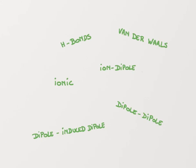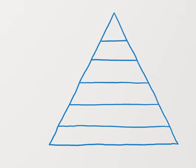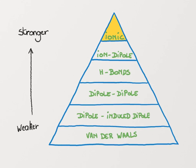Remember that the strongest interaction is an ion-ion interaction, as it involves full charges. The next strongest category is ion-dipole interactions. Then comes hydrogen bonds and dipole-dipole interactions — note that hydrogen bonds are a specific example of dipole-dipole interactions. At the weaker end of the spectrum, we have dipole-induced dipole, and finally van der Waals, or induced dipole-induced dipole interactions.